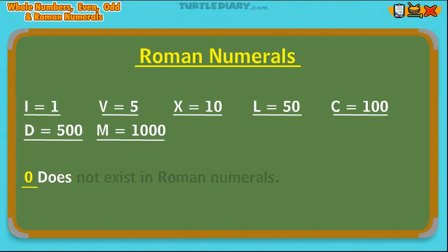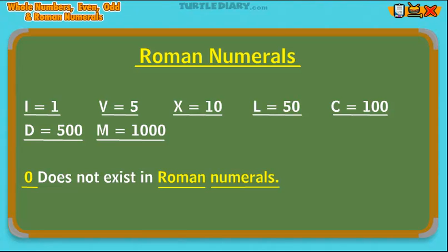Zero does not exist in Roman numerals. These are the seven Roman numerals you should know. Notice that there isn't a letter for the number zero. The idea of zero does not exist in Roman numerals.